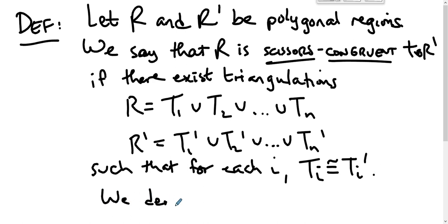We denote this relation by writing R is scissors congruent to R prime. This is intentional. This is the equivalence symbol that you're familiar with from Math 239. Its use is intentional here.